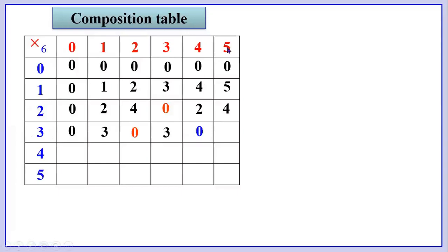Now the row headed by number 3: 3 into 0 is 0, 3 into 1 is 3, 3 into 2 is 6 — when 6 is divided by 6 the remainder is 0. 3 into 3 is 9 — when 9 is divided by 6 the remainder is 3. 3 into 4 is 12 — when 12 is divided by 6 the remainder is 0. 3 into 5 is 15 — when 15 is divided by 6 the remainder is 3.